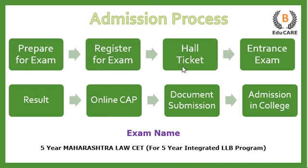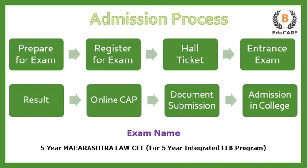After that, you get a hall ticket which has your examination center written on it. You go to the examination center and give the entrance exam. After the entrance exam, you get your result. On the basis of that result, the CET cell conducts the Centralized Admission Process (CAP), where you enter your documents, college preferences, and your CET score, and then on that basis you get admission into the law college.